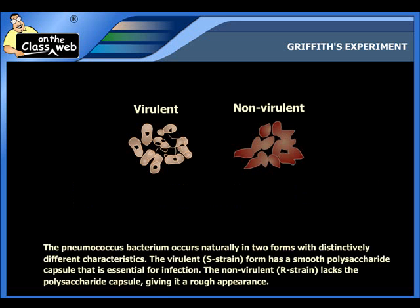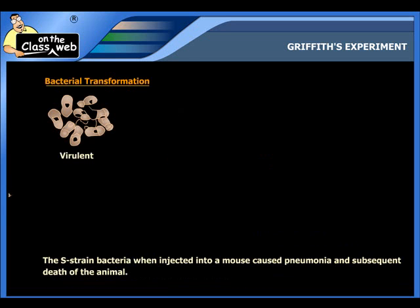Griffith conducted his experiments with the Pneumococcus bacterium, which occurs naturally in two forms with distinctly different characteristics. The first form is the virulent or S-strain, which has a smooth polysaccharide capsule essential for infection. The second form is the non-virulent or R-strain, which lacks the polysaccharide capsule, giving it a rough appearance.